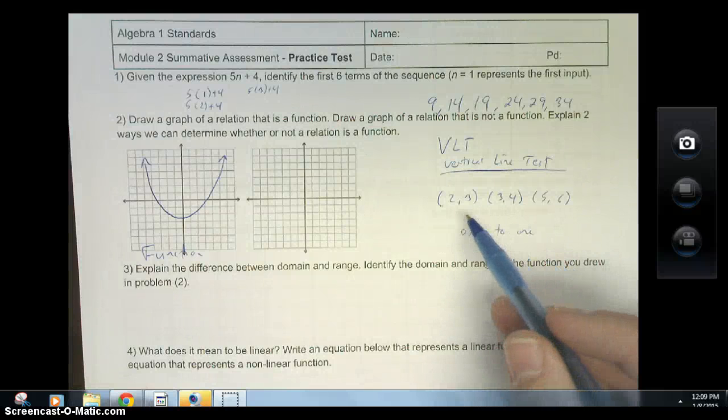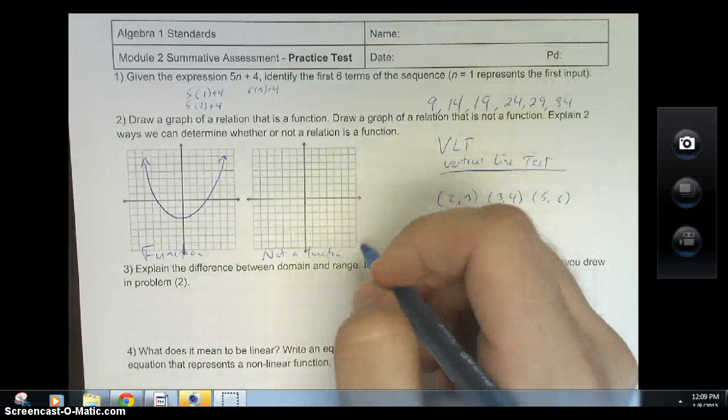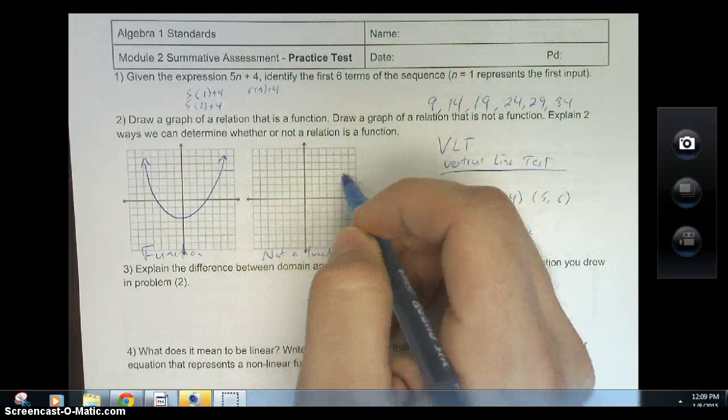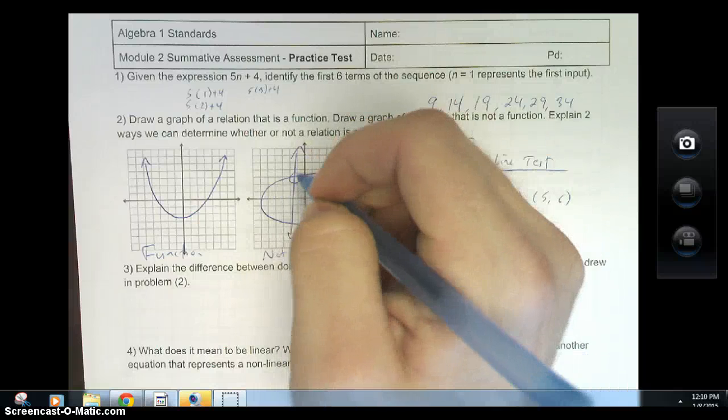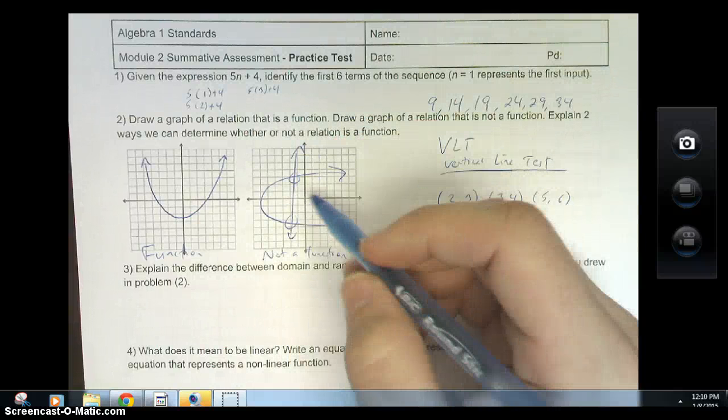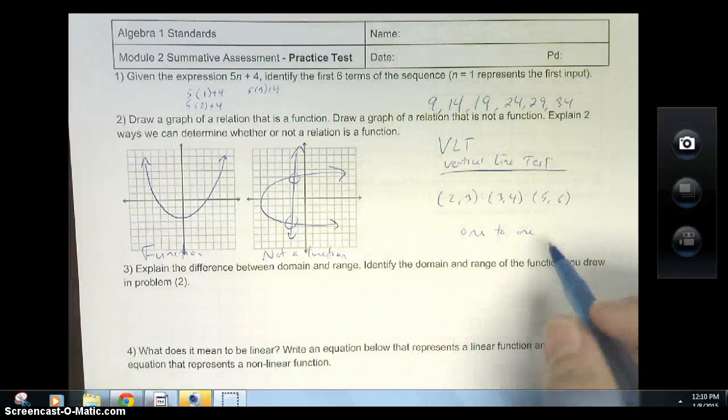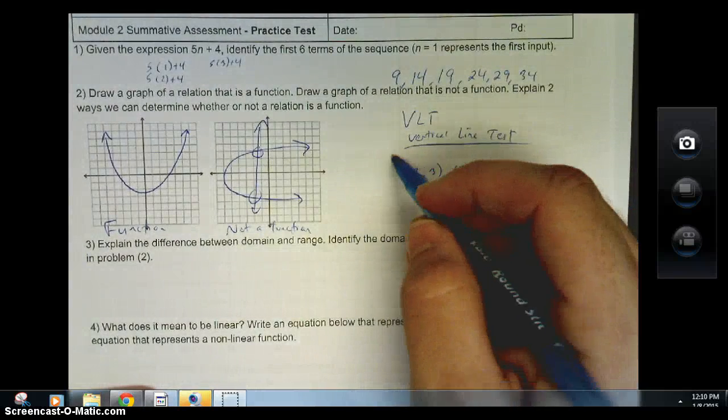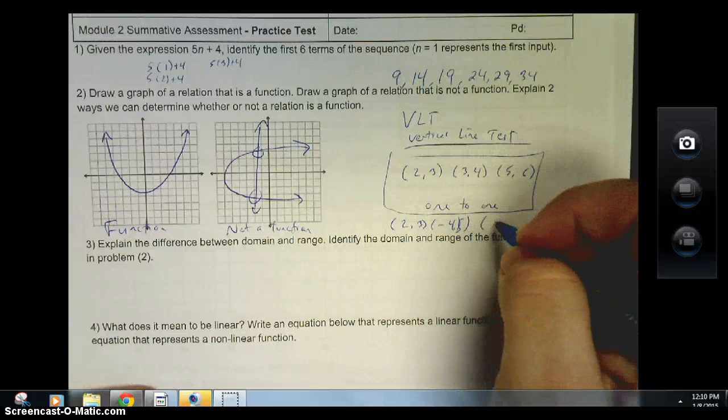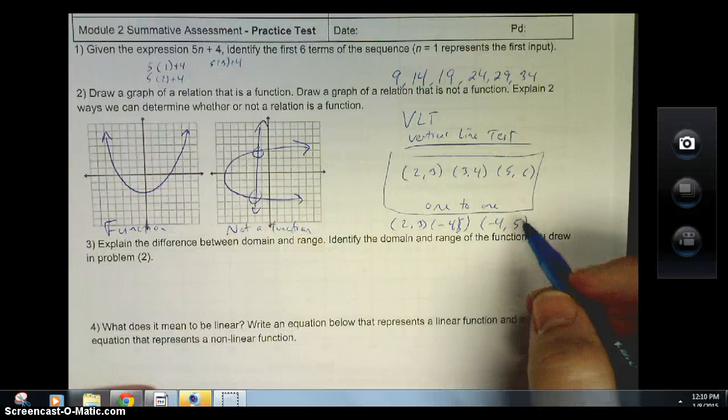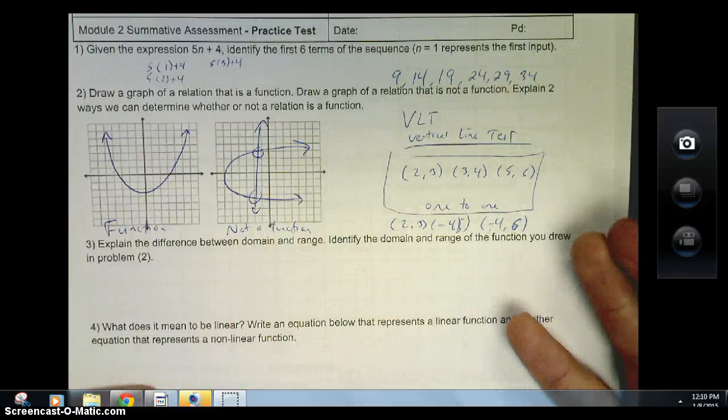Now an example of not a function is something that fails the vertical line test. I'm going to draw a little curve right here. If I draw a line straight down, it hits two points. Therefore it fails your vertical line test, hence it's not a function. I'll give you an example over here. If I had points like 2,3, negative 4,5, and negative 4,6, you'll notice that these points are repeating. It's not a function. There's your two ways.